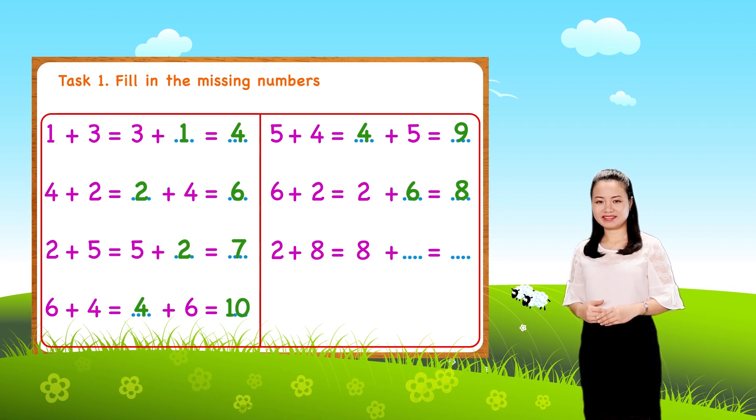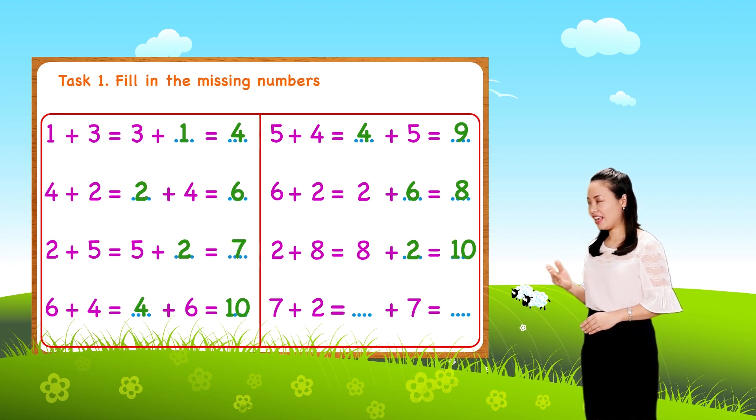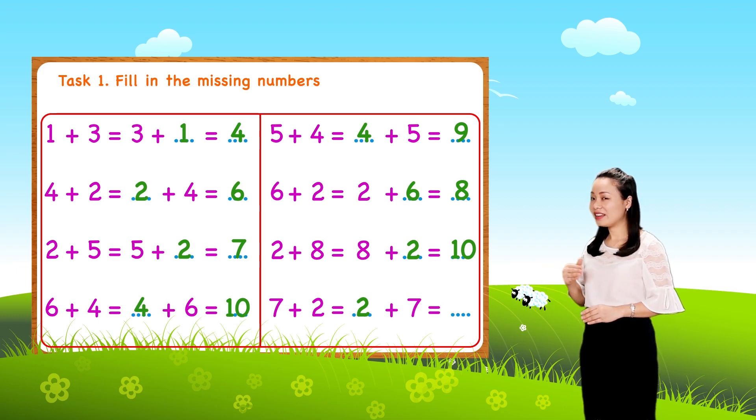Next, 2 + 8 = 8 + 2 = 10. The last one, 7 + 2 = 2 + 7 = 9.